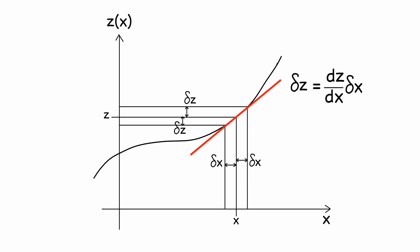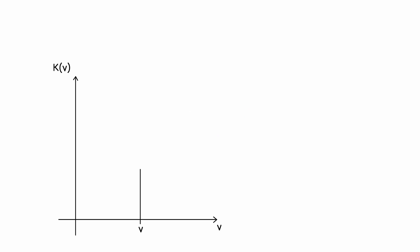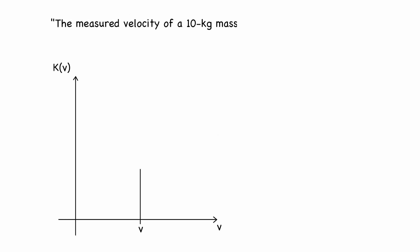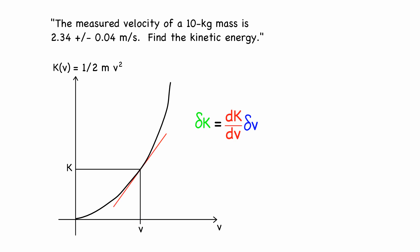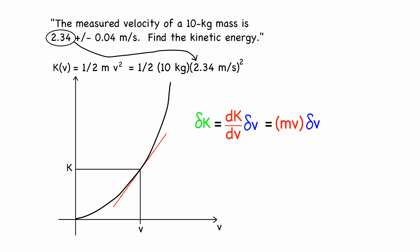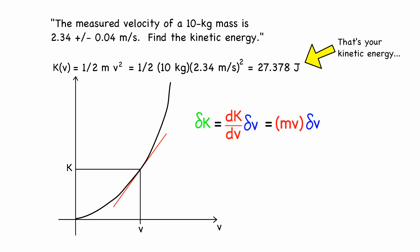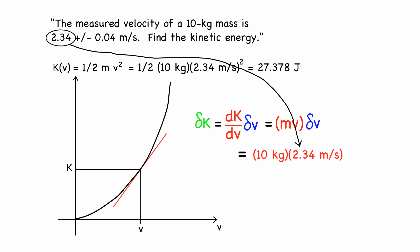Let's look at an example. Suppose you've measured a velocity v and you want to calculate the kinetic energy K, which is one-half mv squared. Suppose that m was an exact number. There's an uncertainty on v, delta-v. The uncertainty on K is the derivative of K with respect to v, times the uncertainty on v. Now plug in all your numbers to compute not only K, but also the uncertainty on K.